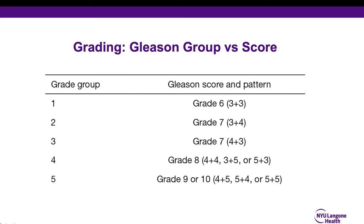Over time, there has been developed a more simplified grading system called the Gleason group score. In this system, the Gleason grade group goes from one to five, and this correlates with the more traditional Gleason score or Gleason score pattern, which is based on two numbers. You can see here that grade six prostate cancer, which is Gleason three plus three, is now simplified as Gleason grade group one. Grade seven cancer can be differentiated into Gleason three plus four, which is called group two, versus Gleason four plus three, which is called group three. Highly aggressive tumors, which include Gleason grade nine and ten prostate cancers, are called grade group five. Frequently, biopsy reports will continue to provide information using both grading systems, as this transition occurred not too long ago.